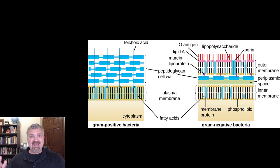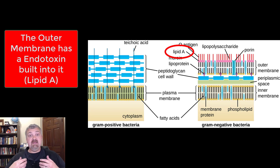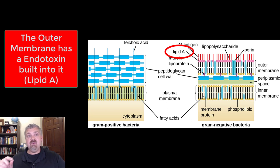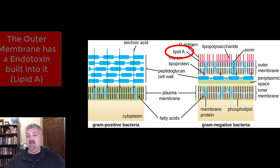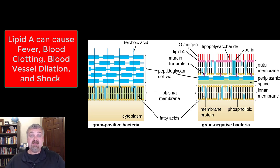There's one last nasty piece: lipid A, a toxin baked right into the outer membrane of every gram-negative bacterium. Gram-positive bacteria have exotoxins secreted while the cell is living, but gram-negative bacteria have these lipid A endotoxins. When the cell dies, it dumps this toxin into the environment, which can lead to fever, blood clotting, dilation of blood vessels, and even shock. So when killing gram-negative bacteria, you have to be careful — kill them too quickly and the toxin release can actually kill the patient.